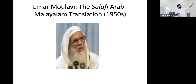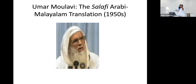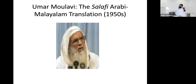A Salafi Arabi Malayalam translation of the Quran was done in the 1950s by Umar Maulawi. These people were going to Saudi Arabia and meeting Ibn Baz — Ibn Baz actually mentions the name Umar Ahmad Maulawi in some of his tracts. That kind of global connection was happening. Umar Maulawi met King Abdulaziz in person and gave him a memorandum saying that Salafi da'wa had started in Kerala about 30 years ago and that Saudi Arabia should consider Salafi brothers from Kerala for jobs.